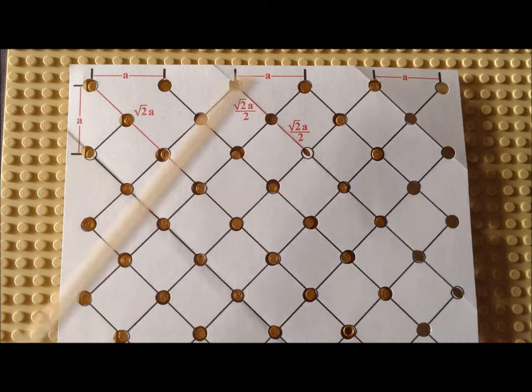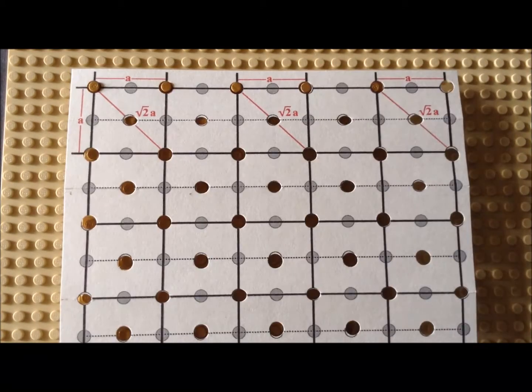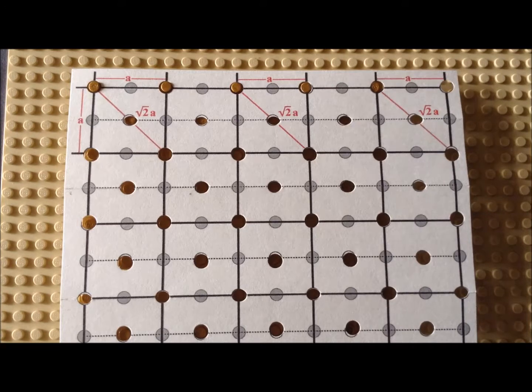And now we have a primitive cell and not a centered cell, even though we have an identical lattice as before, showing us that whether we have a primitive or a centered cell very often depends on how we choose to define our coordinate system.